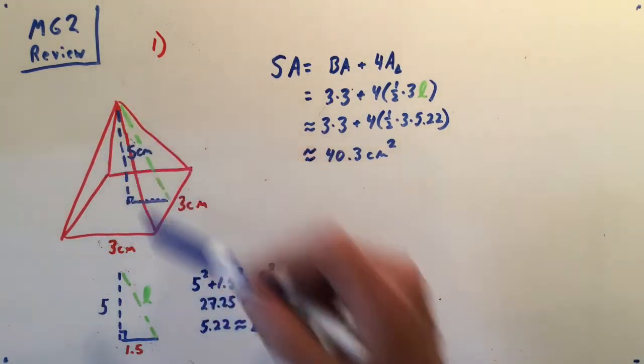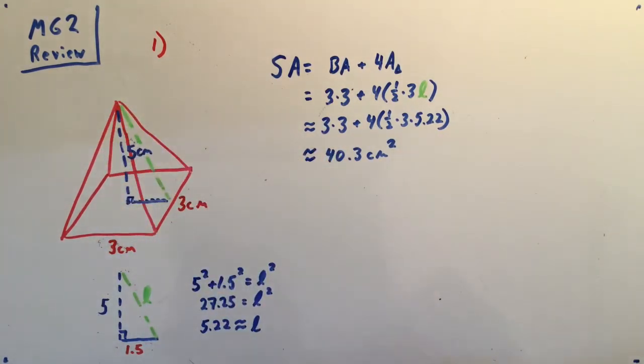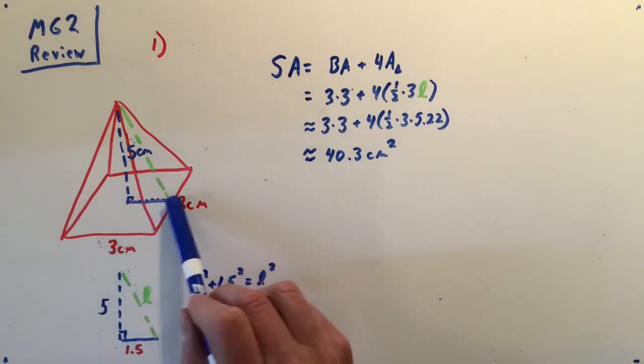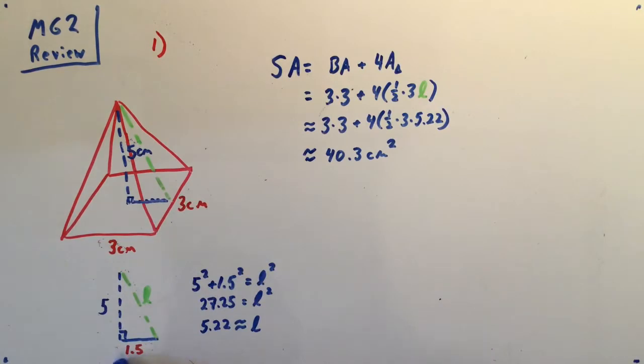I'm going to have to use this right triangle here and apply the Pythagorean theorem to it. The height is going to be 5. The distance from here to here is going to be 1.5 because it's half of a side length of the square. Then I apply the Pythagorean theorem and I get that slant height is 5.22.